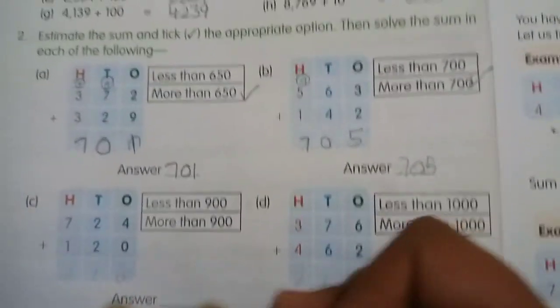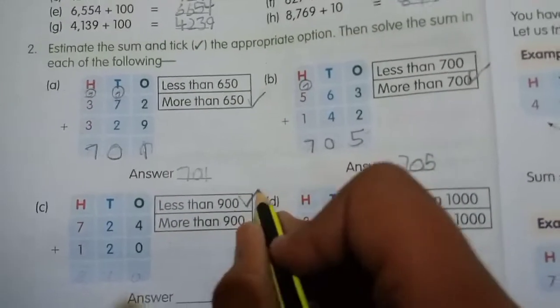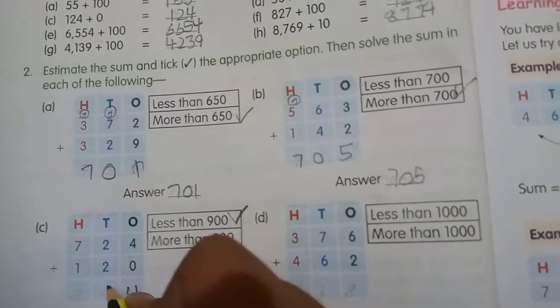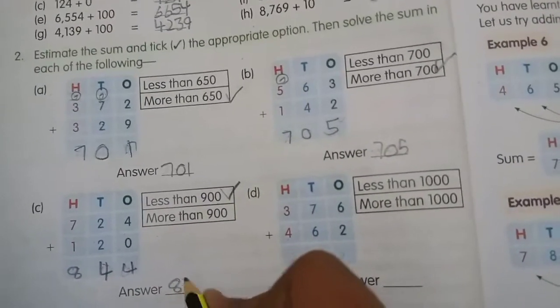Ab guess kar lete hain pehle. Yeh dono ka plus aayega less than 900. 4 aayega yahan par, yahan par bhi 4. Yahan par aayega 8. Iska answer aayega 844.